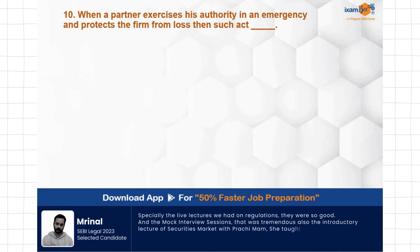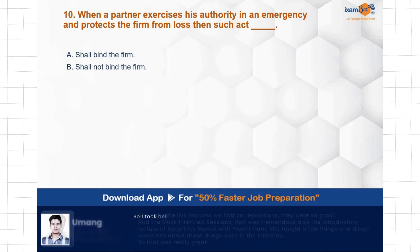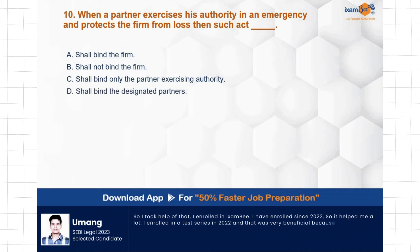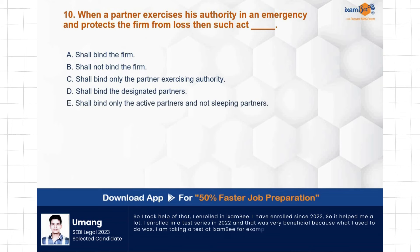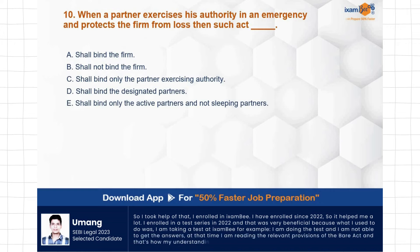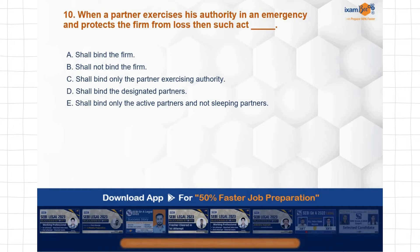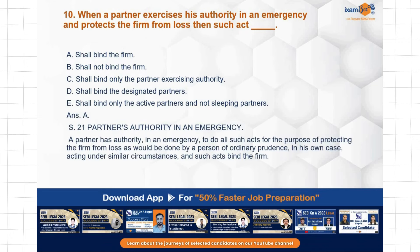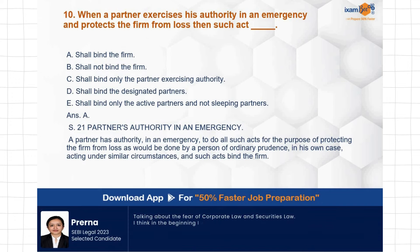Question: When a partner exercises authority in an emergency and protects the firm from loss, then such acts shall — bind the firm, not bind the firm, bind only the partner exercising authority, bind the designated partners, or bind only the active partners. The correct answer is A — such acts shall bind the firm. Section 21 deals with a partner's authority in an emergency. The only requirement is that he acts with ordinary prudence and reasonably.